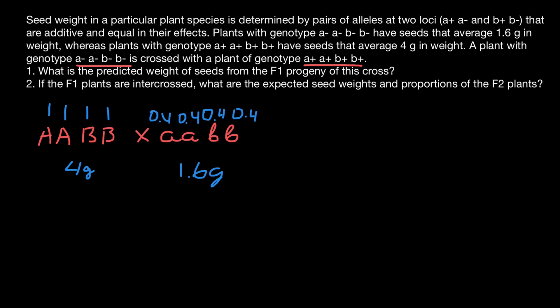We get 1.6 by dividing 1.6 by four alleles — each recessive allele adds 0.4 grams. And we get 1 gram per dominant allele by dividing 4 by four alleles. Now, here is probably the part where everyone would be confused. Let's read the problem again: seed weight is determined by pairs of alleles at two loci that are additive and equal in their effects.